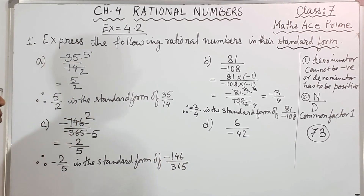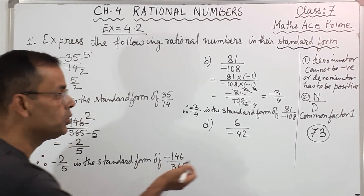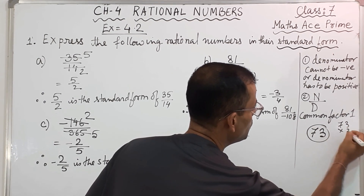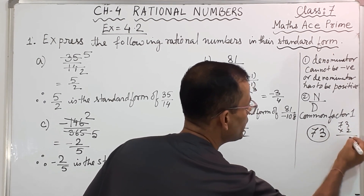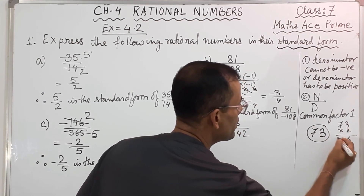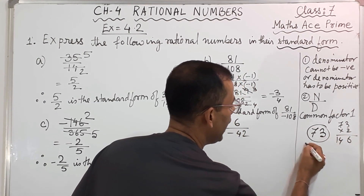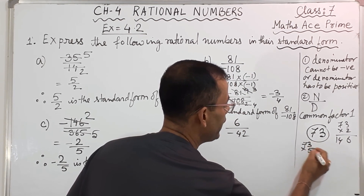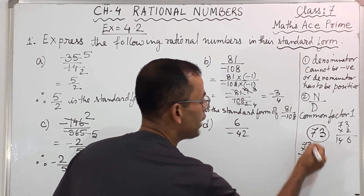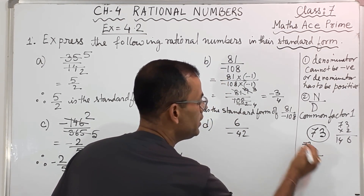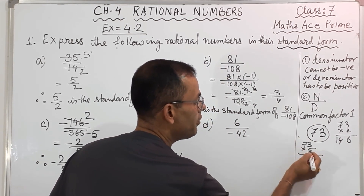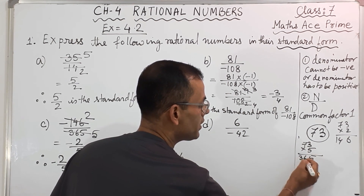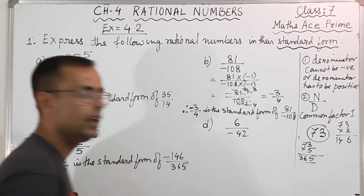You will say, sir, how did you get it? See: 73 into 2 — 2 threes are 6, 2 sevens are 14, so 146. Again, 73 into 5 — 5 threes are 15, write 5 carry 1; 5 sevens are 35, plus 1 is 36, so 365. Clear? Understanding?